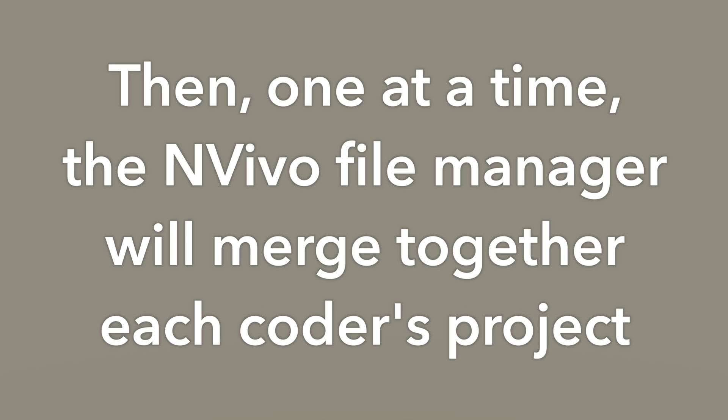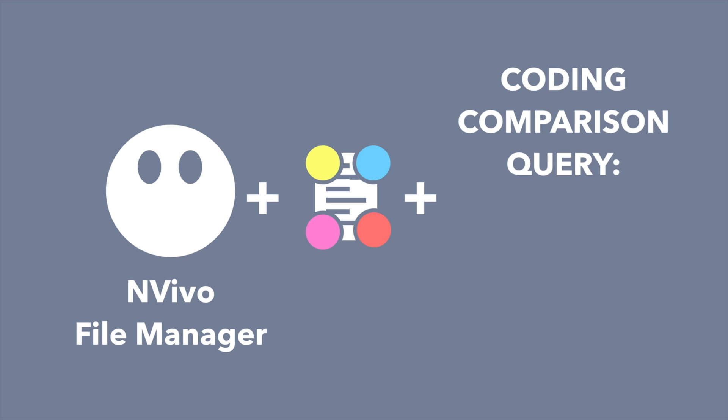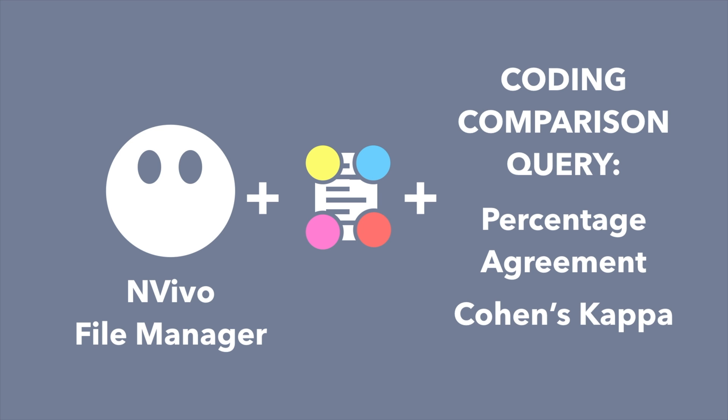The NVivo file manager will then merge together those projects — opening an NVivo project, either the backup or their own file. There are some slight distinctions with how NVivo handles the merging depending on which file you open, and I'll cover those later. Then one at a time, the file manager merges each coder's project together. After that, you can run a coding comparison query to see how your coding is similar to and different from your teammates'.